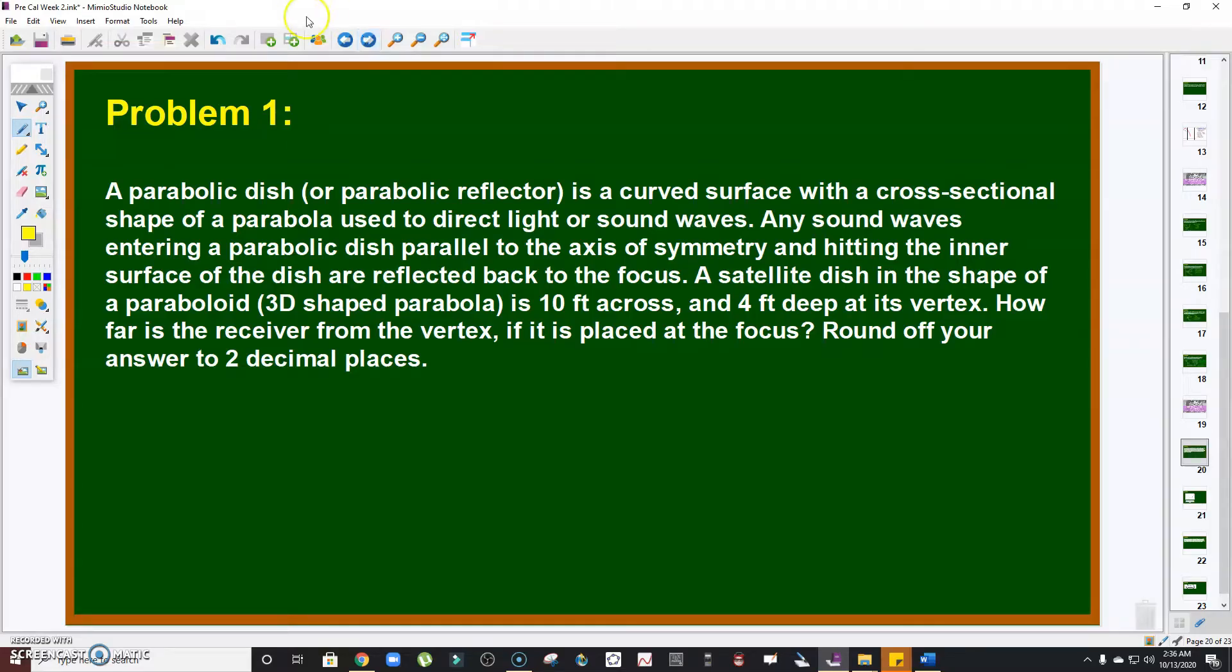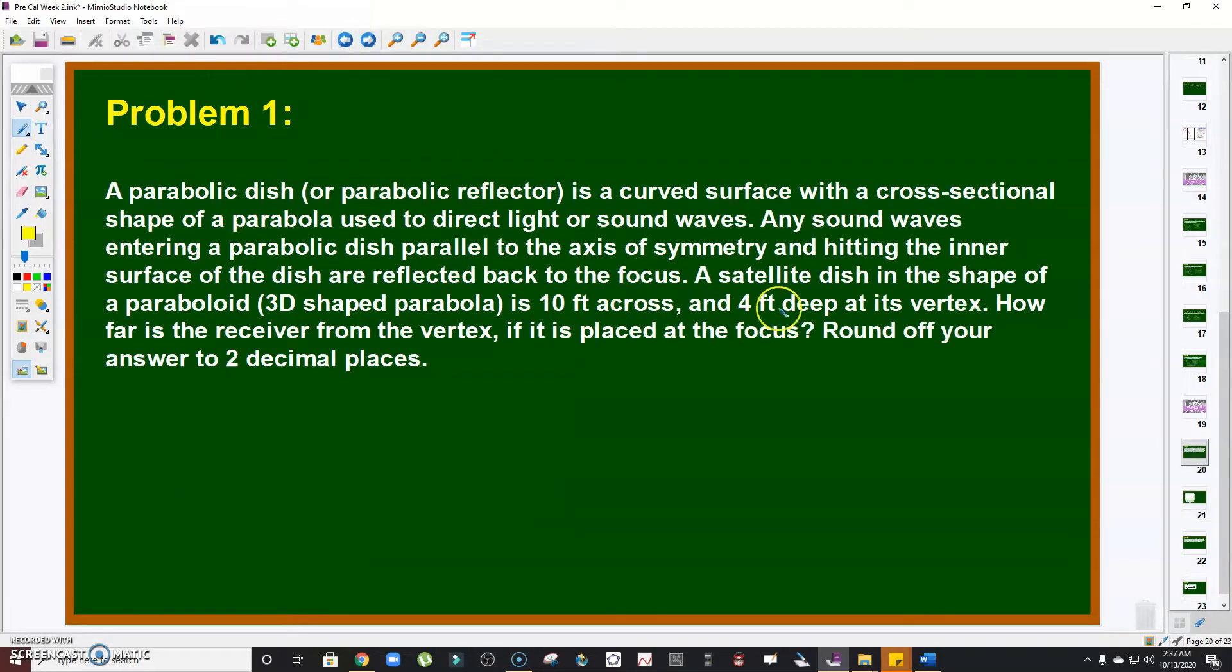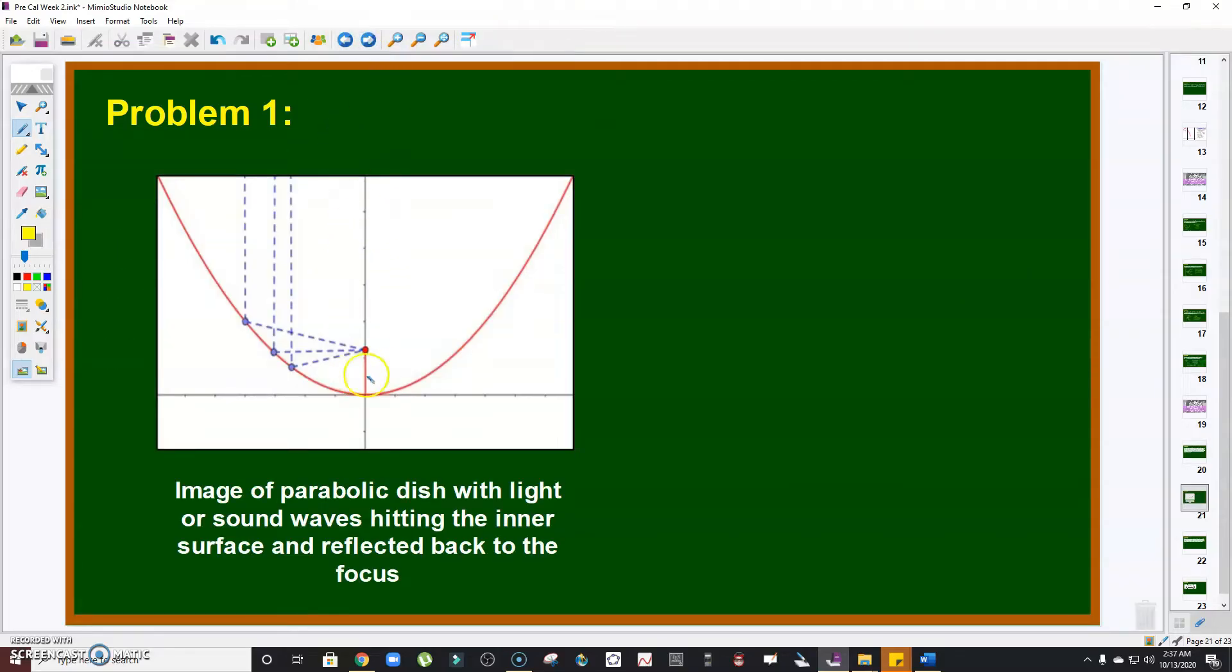So suppose this is the parabolic mirror. Once light or sound waves hit the surface, the parabolic surface will redirect it to the focus. After it hits the inner surface of the parabola, it will reflect back to the focus. Imagine this is the parabolic mirror. The problem states it is 10 feet across, 4 feet deep at its vertex. So I'm going to place the vertex at the origin for convenience.